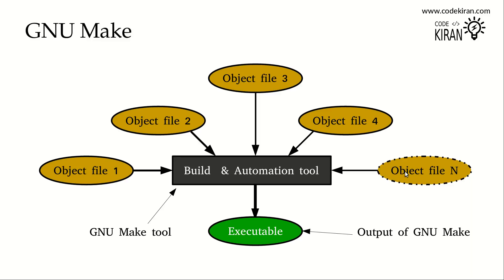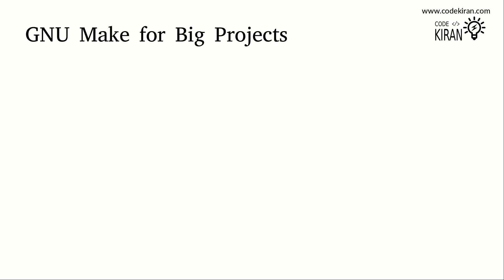The object files shown in the figure represent features of a big project which are divided and given to software developers in your team. Each software developer will build, update, or compile the object files and give them to you — either the actual object files or the source code. This make utility will compile all these features and finally create a target file as the output.